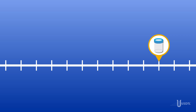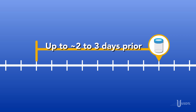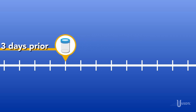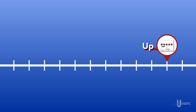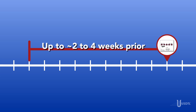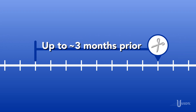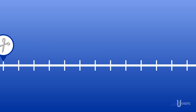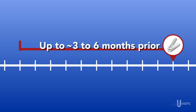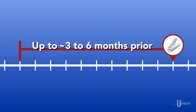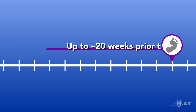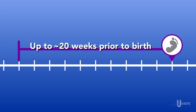Urine: up to approximately two to three days prior to collection. Patched blood: up to approximately two to four weeks prior to collection. Scalp hair: up to approximately three months prior to collection. Fingernail: up to approximately three to six months prior to collection. Umbilical cord and meconium: up to approximately 20 weeks prior to birth.